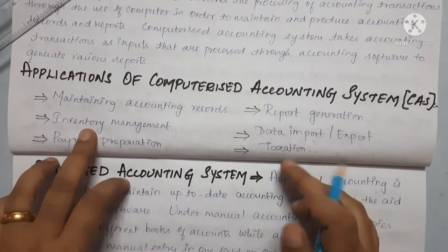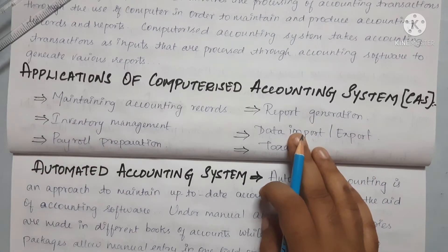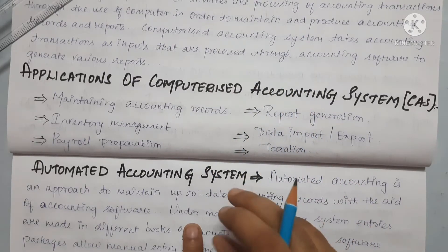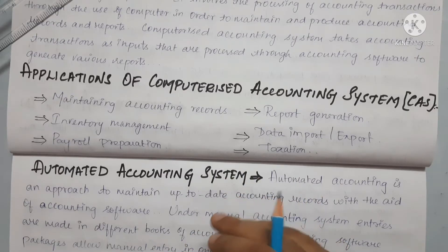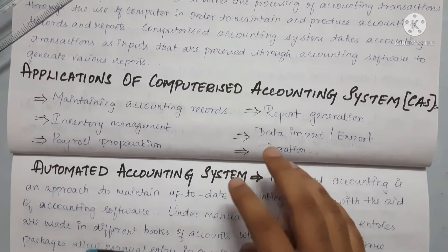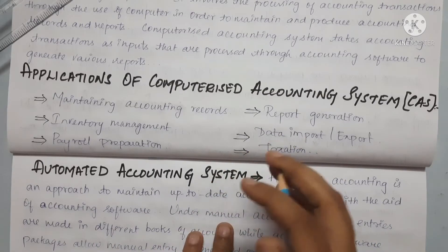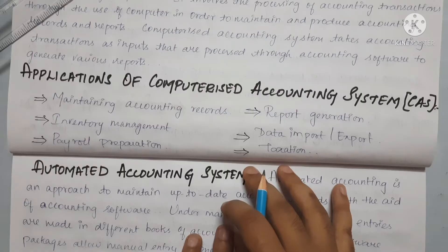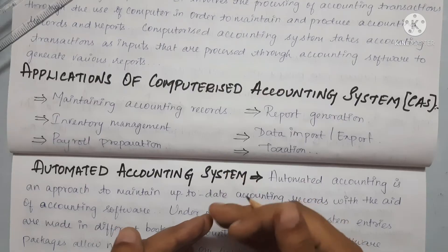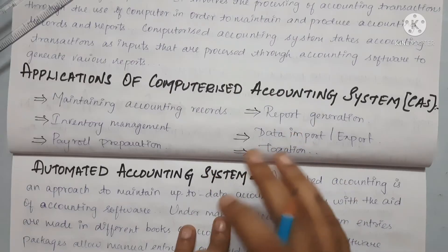The next step is applications of Computerized Accounting Systems. We can use this to help in maintaining accounting reports. Instead of maintaining records manually, we use the software for day-to-day accounting features and development.